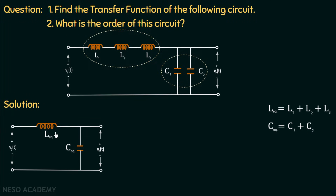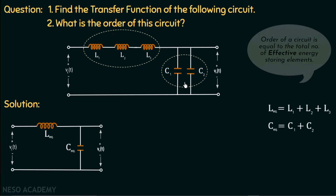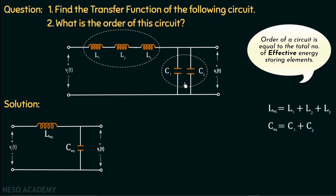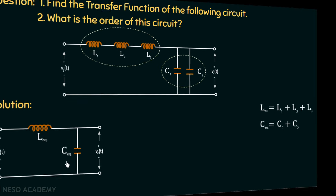In the given circuit there were three inductors and two capacitors, so some people might say the order is five — but it is not five. The order equals the total number of effective energy storing elements. These three inductors are effectively equal to one inductor with equivalent inductance L1 + L2 + L3, and the two parallel capacitors are effectively equal to one capacitor with capacitance C1 + C2. So the order is two.